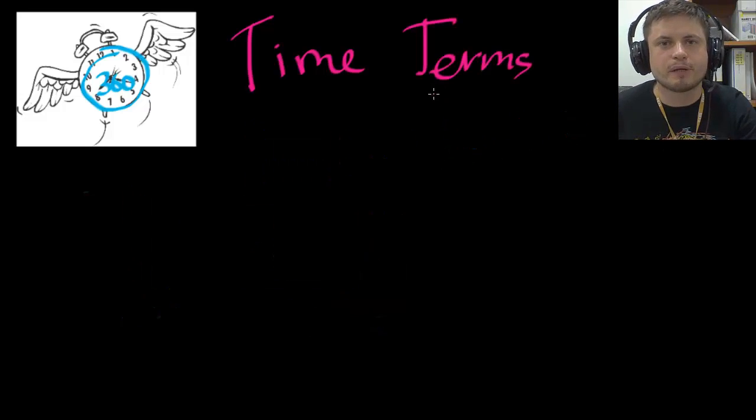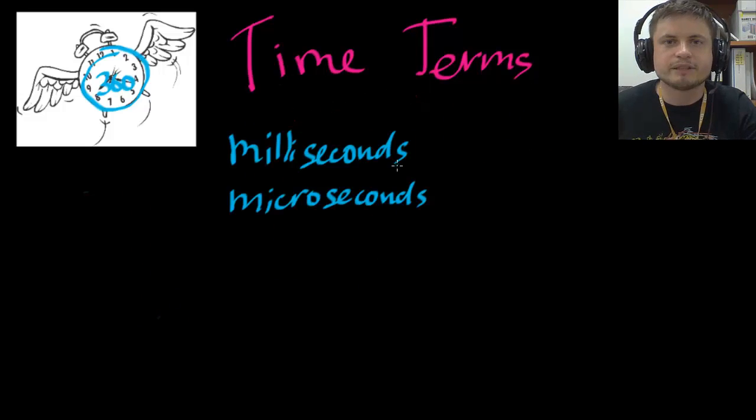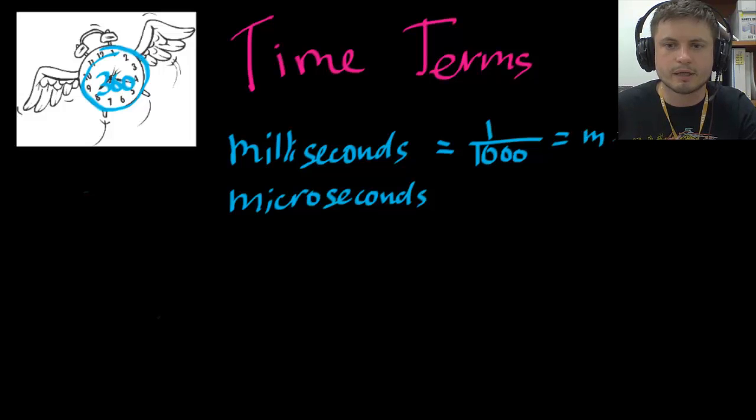Now some other time terms you may want to know are milliseconds and microseconds. And these express really tiny amounts of time. Millisecond is one thousandth of a second and is usually written with a small m, ms. And microsecond is one millionth of a second. And that's written as another m but it's a Greek m, mu s.